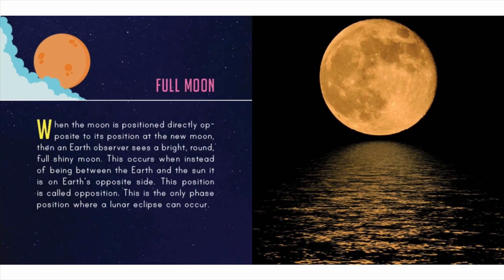Full moon: when the moon is positioned directly opposite to its position at the new moon, an earth observer sees a bright, round, full, shiny moon. This occurs when instead of being between the earth and the sun, it is on earth's opposite side — this position is called opposition. This is the only phase position where a lunar eclipse can occur.